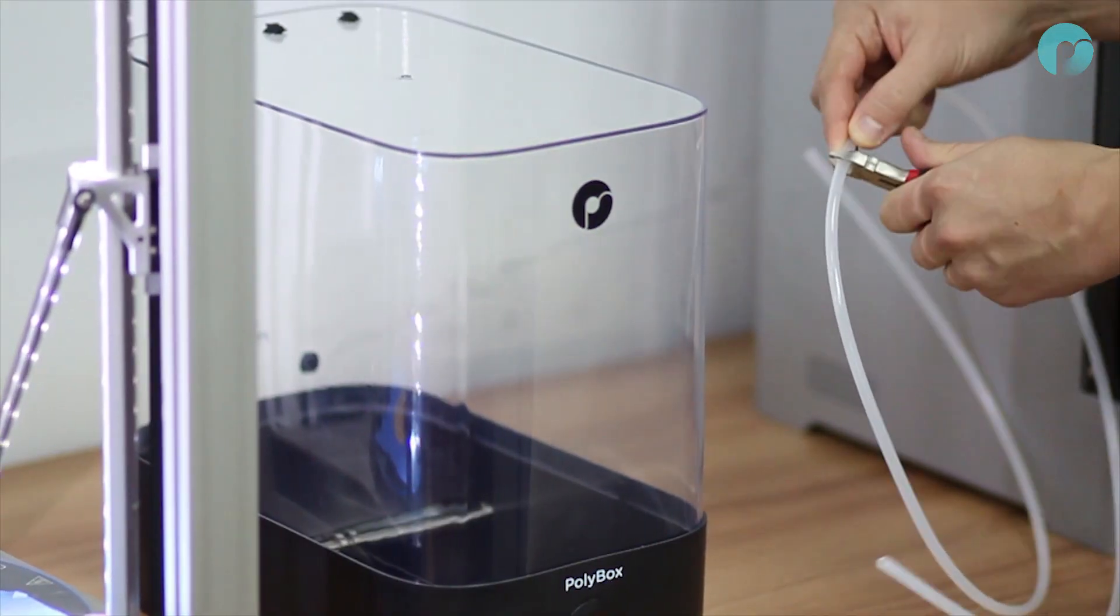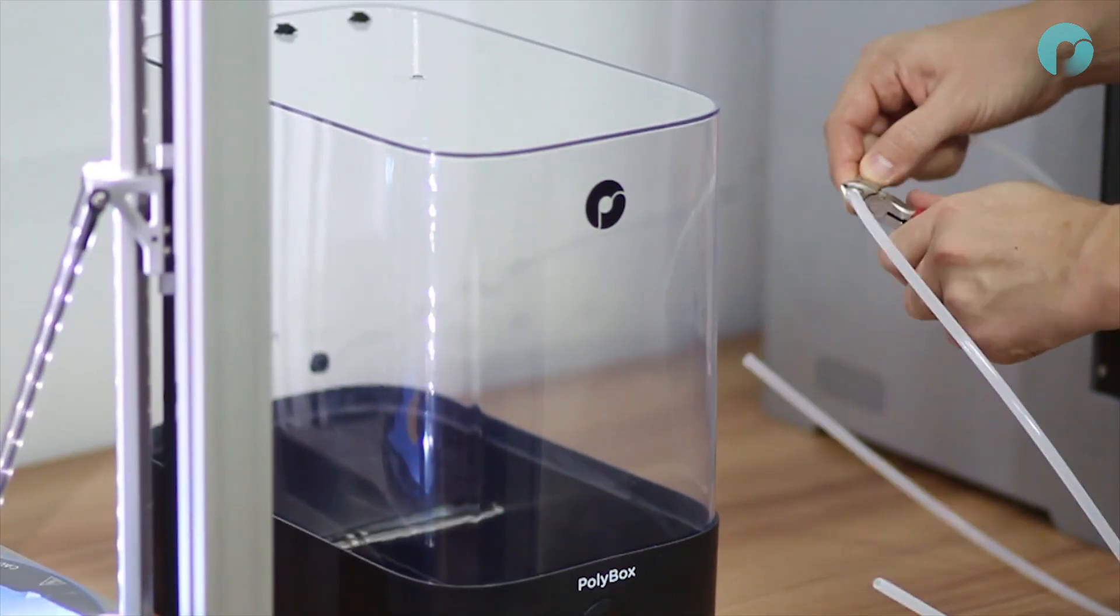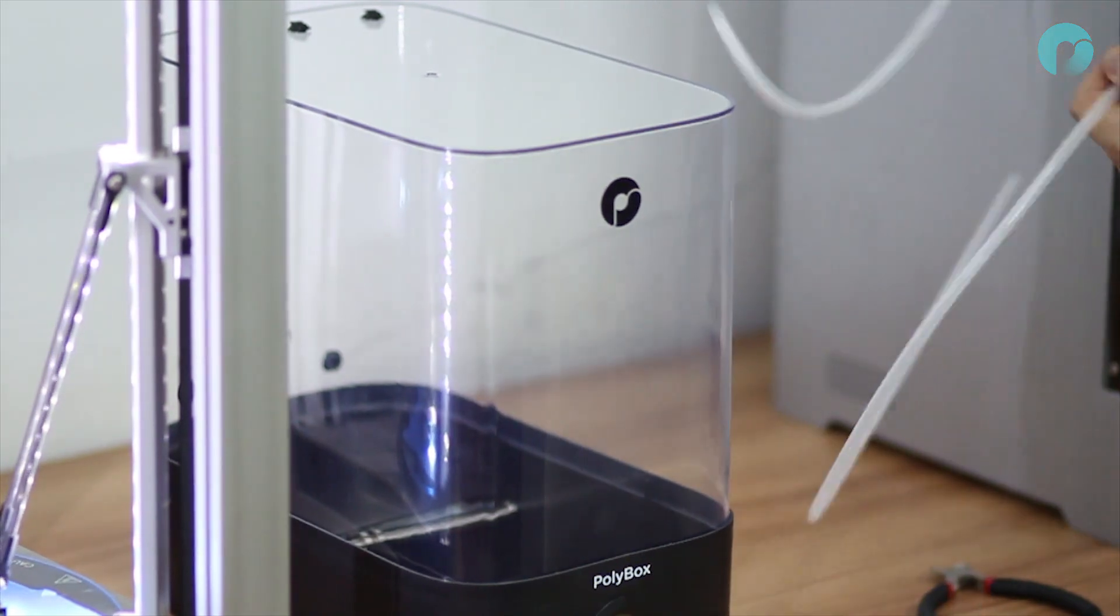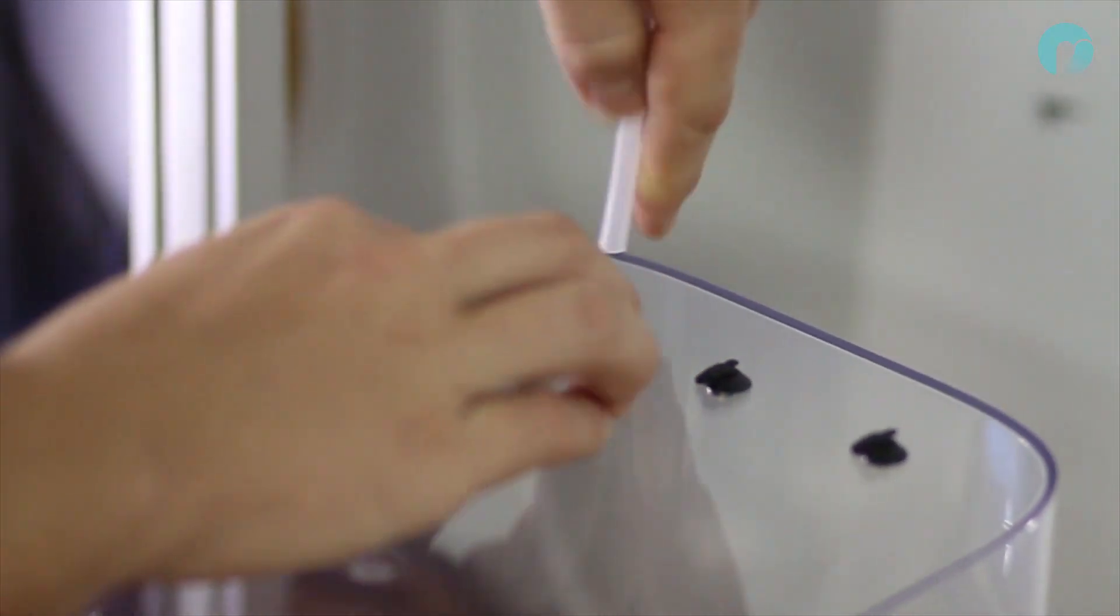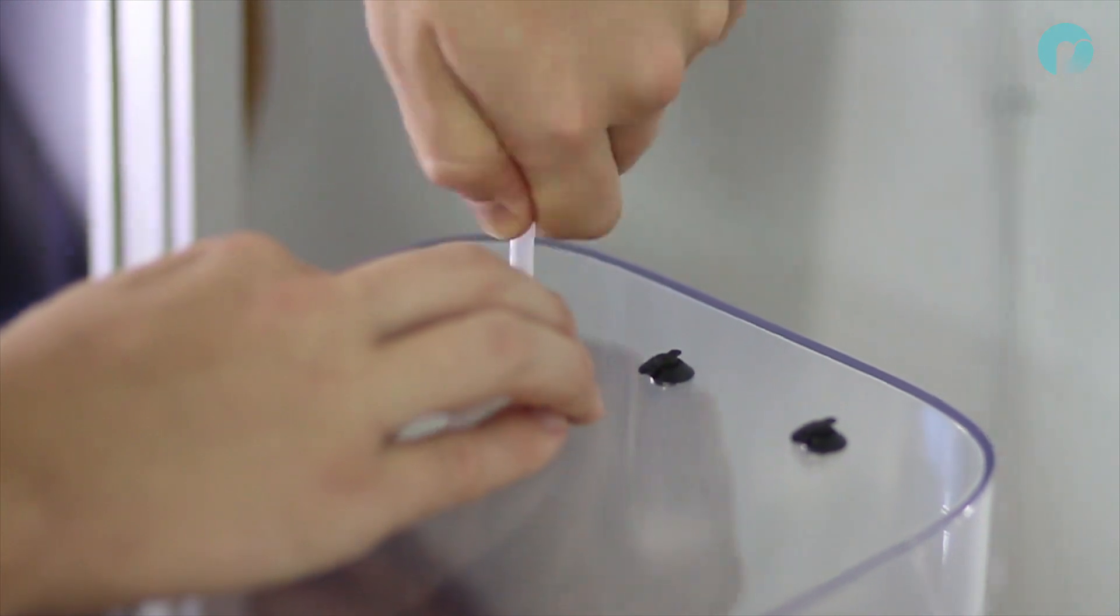You can then cut the filament guide tube to match your setup. If you are running dual extrusion or multi-color prints, insert the guide tubes in the outer holes. The middle hole is for 3kg spools.